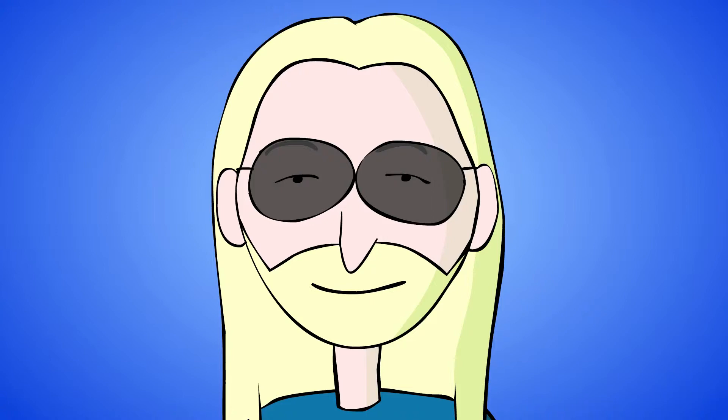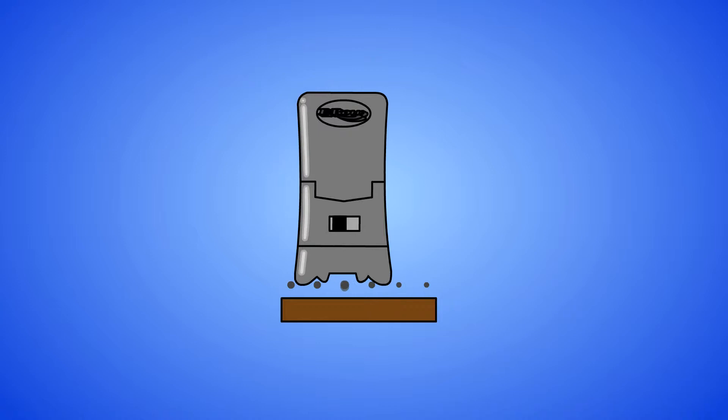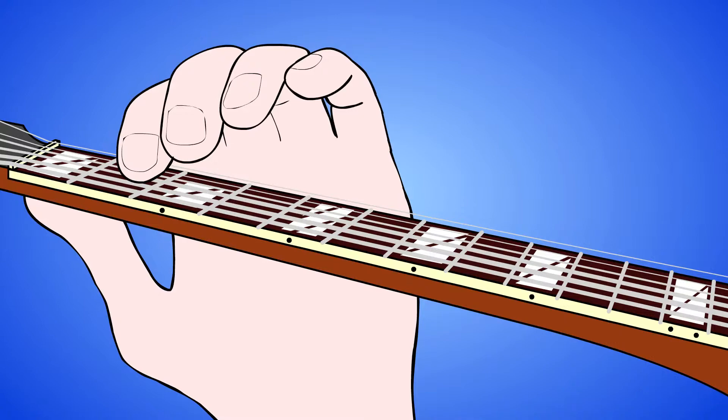Moving the Ebo back and forth between two strings requires a little larger movement than with picking. Keep this back and forth cross-string bowing action constant and start fretting the D string. Voila! A cello-like pedal tone.